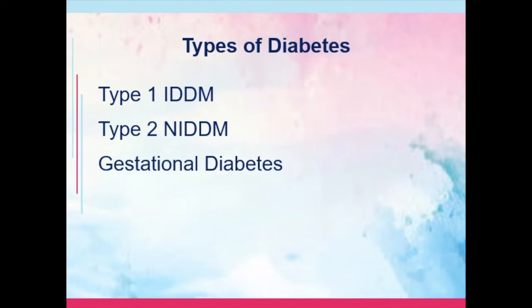There are several types of diabetes: Type 1, Type 2, and gestational diabetes. Your Type 1 diabetes is also known as IDDM — insulin-dependent diabetes mellitus. Type 2 is non-insulin-dependent, and then you have your gestational diabetes.